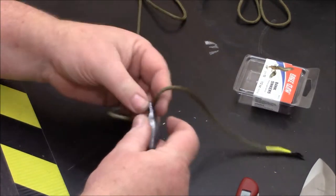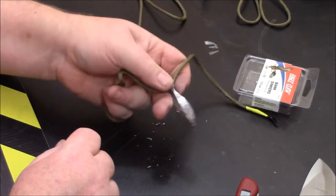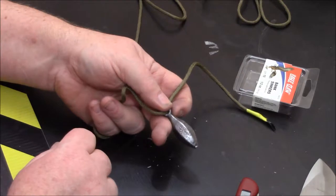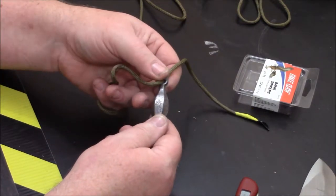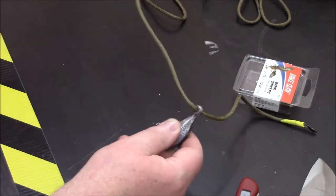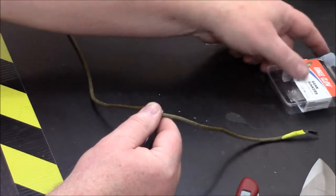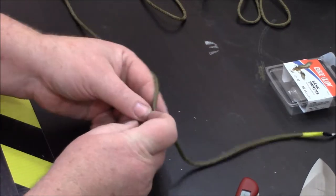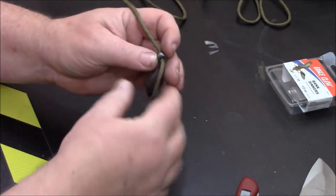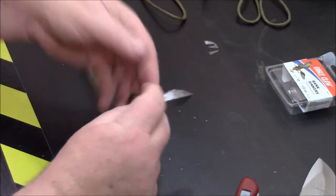These weights, by the way, Walmart $3 and change for three of them. This is the two and a half ounce weight. Of course, they did have much larger and much smaller ones. I got a few smaller ones. Now, tying this off, you can use whatever knot works for you.